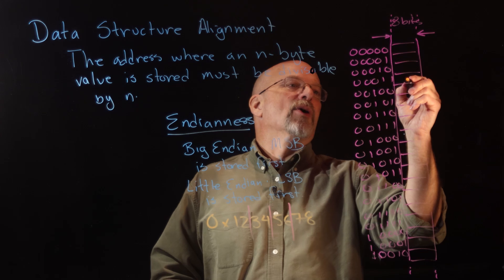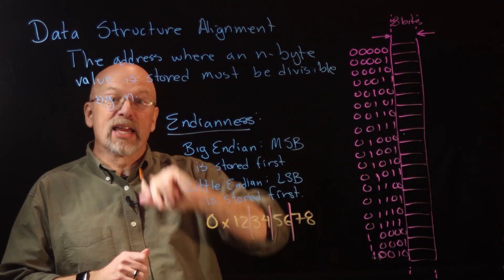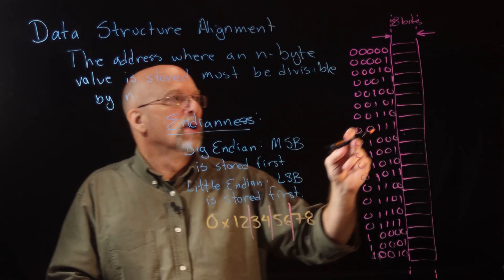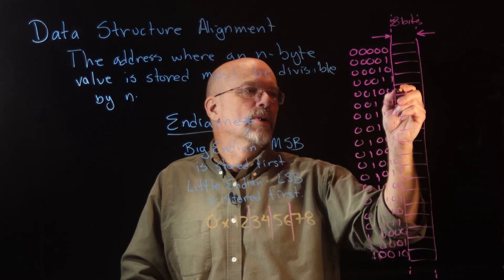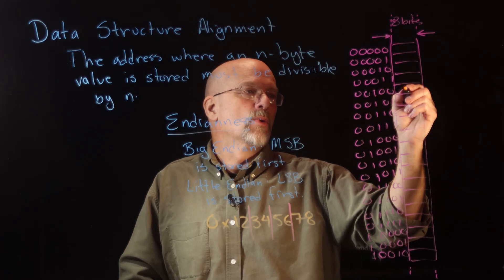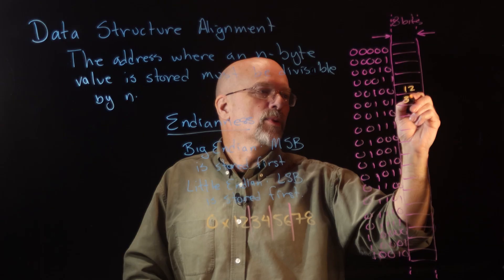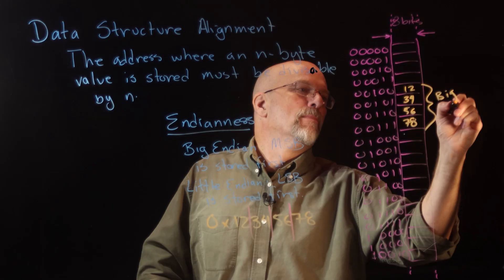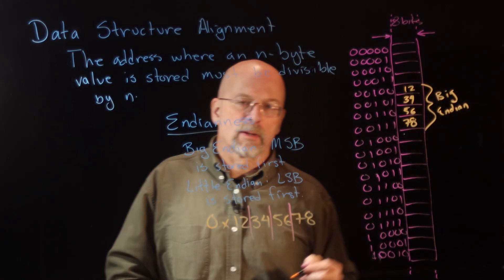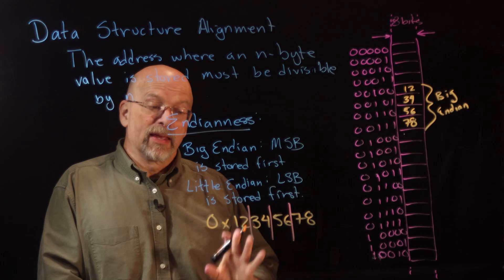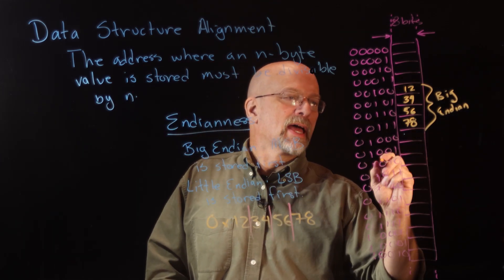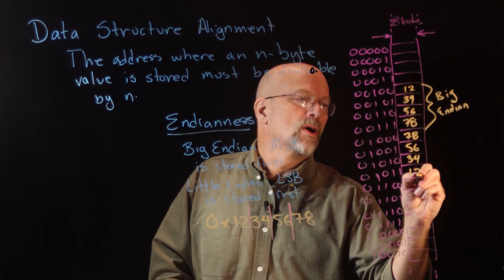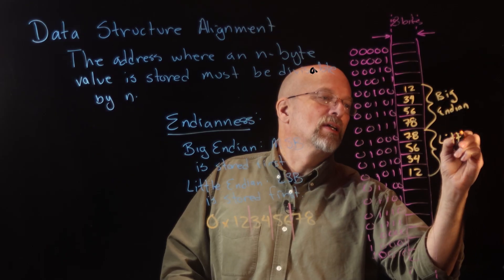For big-endian storage, adhering to data structure alignment, the address must be divisible by 4 — ending in hex 0 or 4. Starting at an address ending in 4, we store 12 first, then 34, then 56, then 78. That's big-endian. If instead our machine is little-endian, we store 78 first, then 56, then 34, then 12 — that's little-endian.